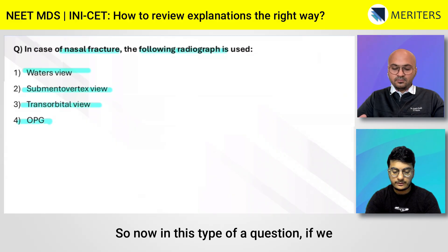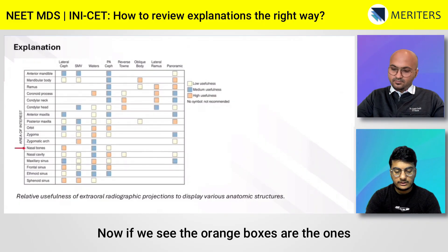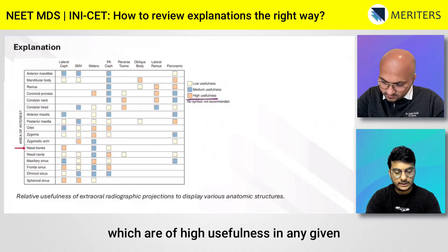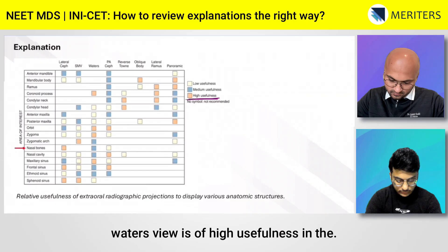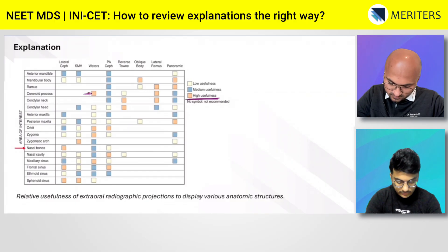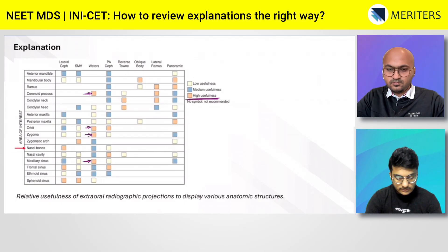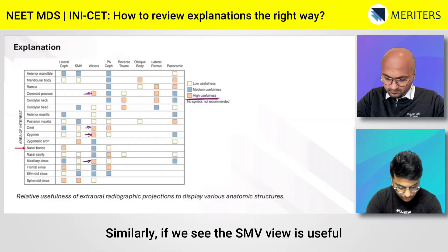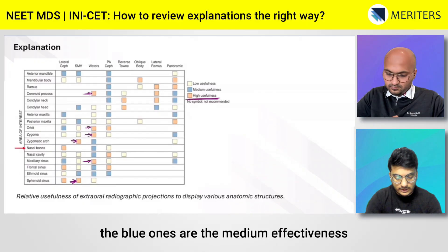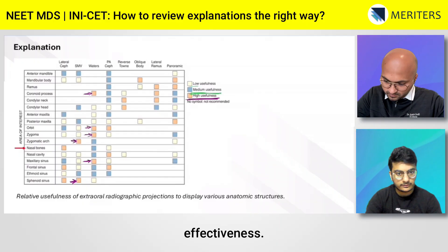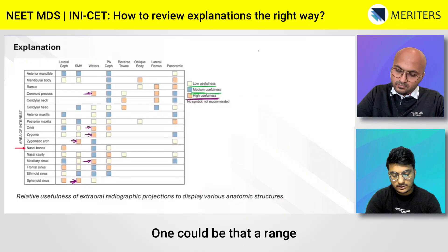In this type of question, the explanation includes a table. The orange boxes represent high usefulness for a given fracture. For example, Waters view is of high usefulness in coronoid process fractures, zygoma fractures, orbit fractures, and maxillary sinus fractures. The SMV view is useful for zygomatic arch fractures and sphenoidal sinus fractures. The blue ones indicate medium effectiveness and the white ones indicate low effectiveness.